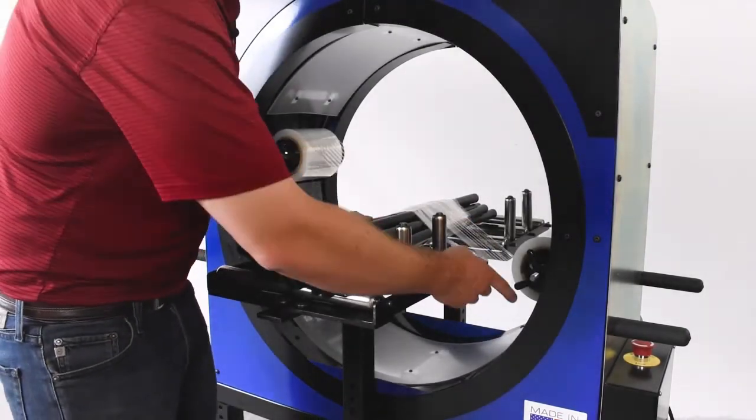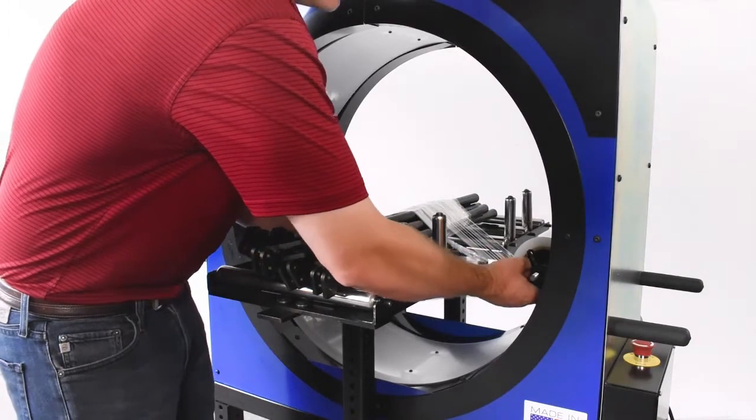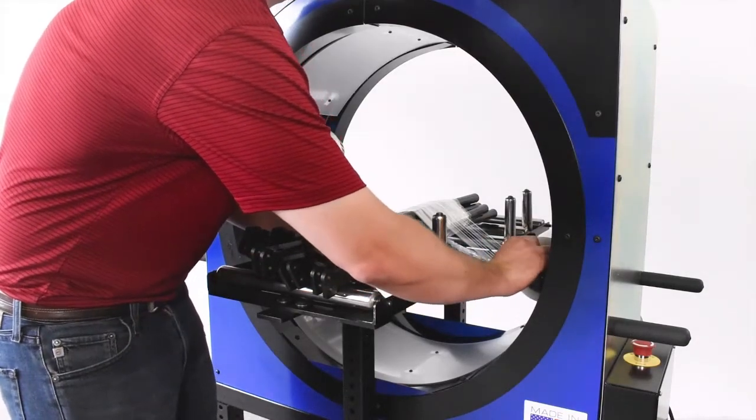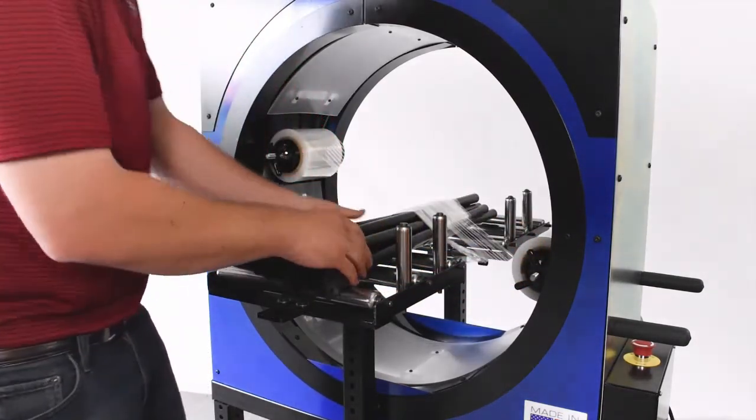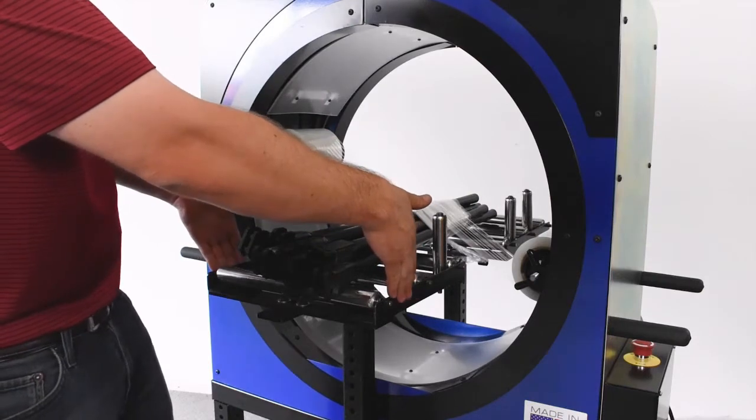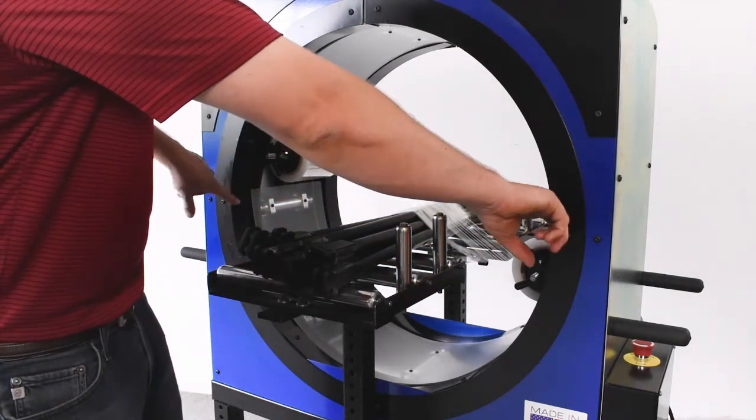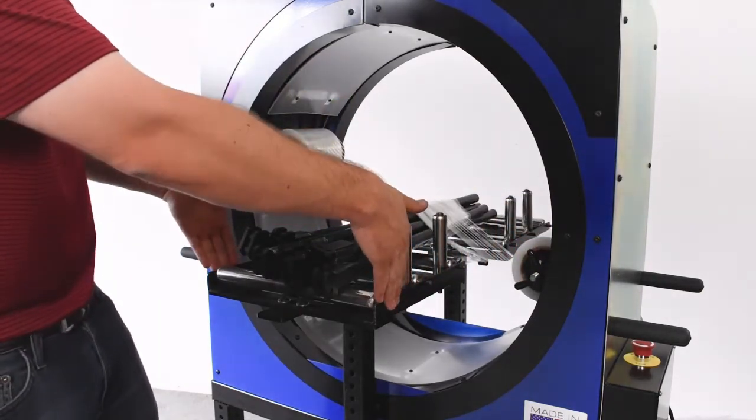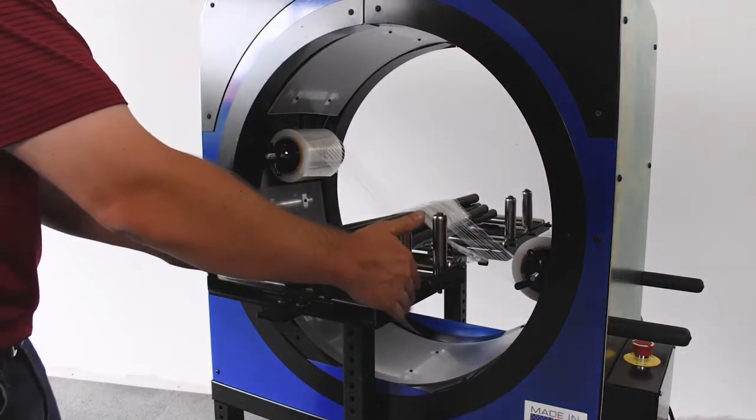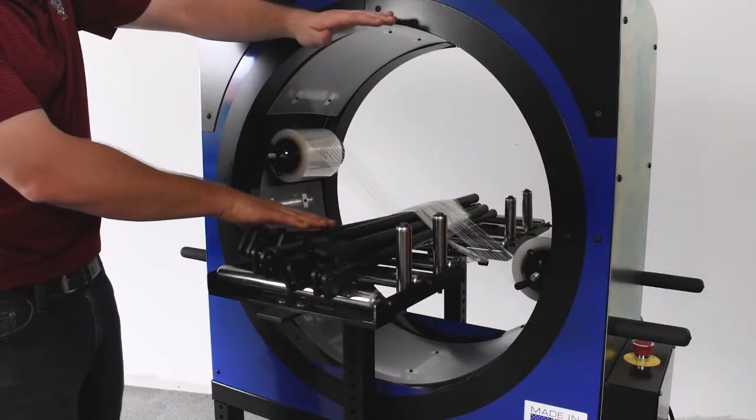As you can see, we've got adjustable tension here on our three and five inch bundling film. You'll notice that while the diameter of the ring is 24 inches, you are limited in width to about 13 inches on this side and about 13 inches high.